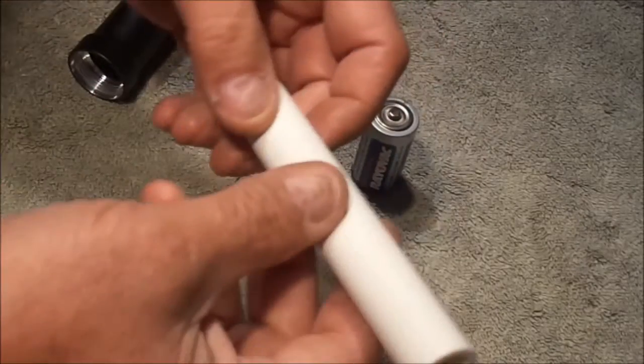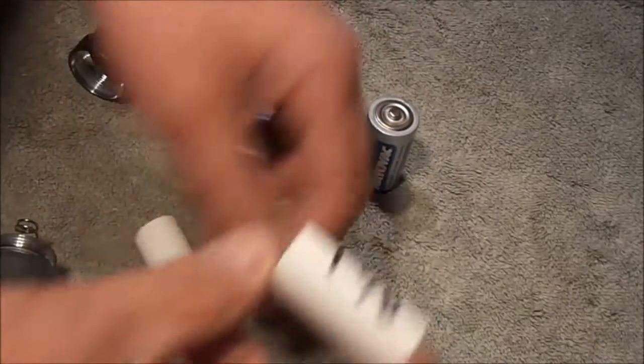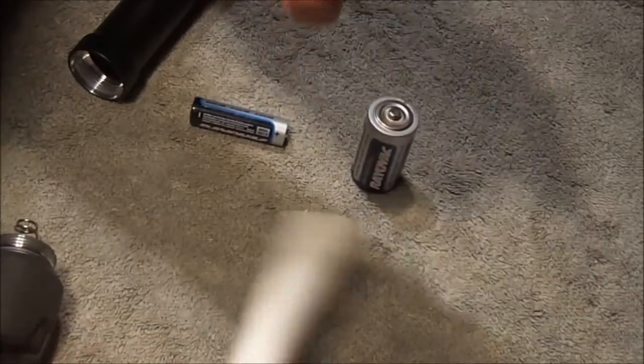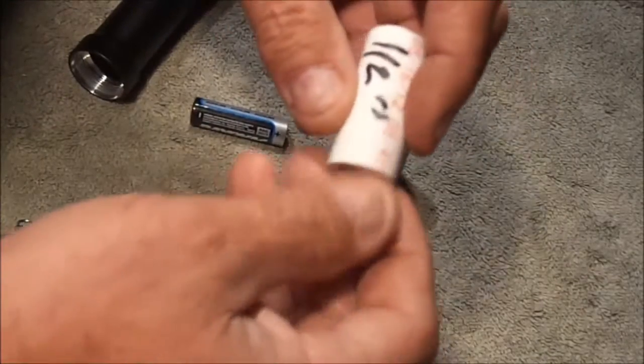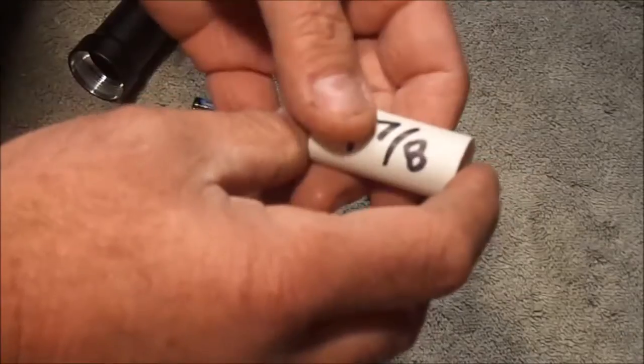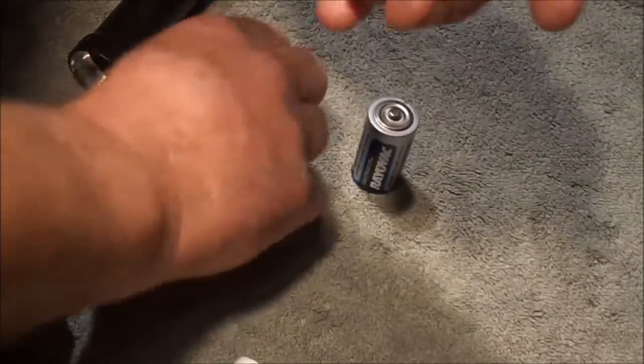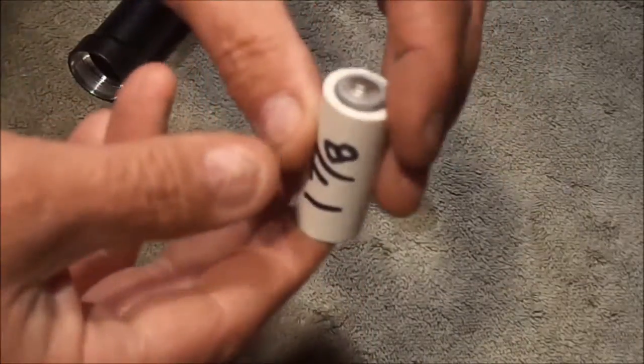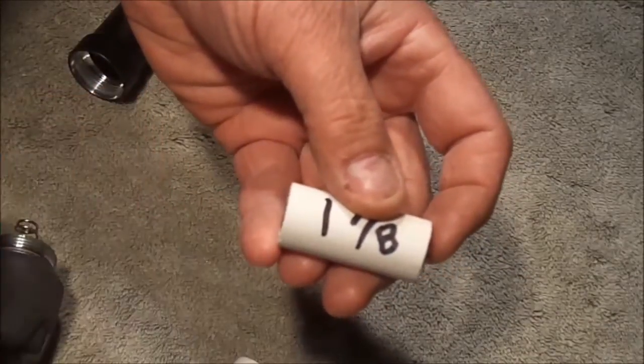What you do is take a piece of PVC pipe and cut it to one inch and seven-eighths. This is half inch pipe, very commonly available, dirt cheap. When you slip a battery inside of it, it mimics a C battery.